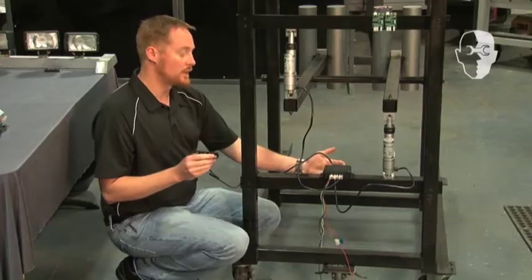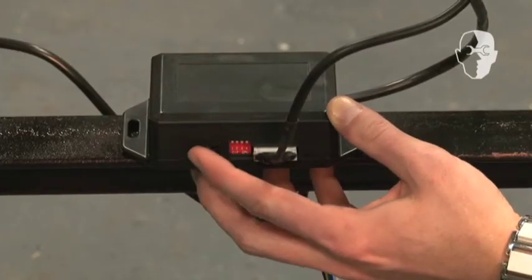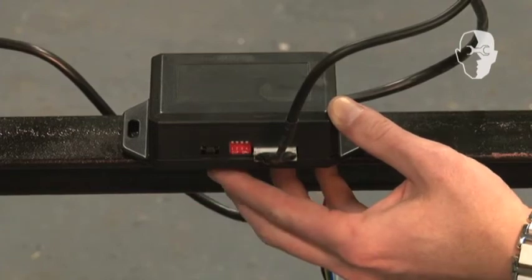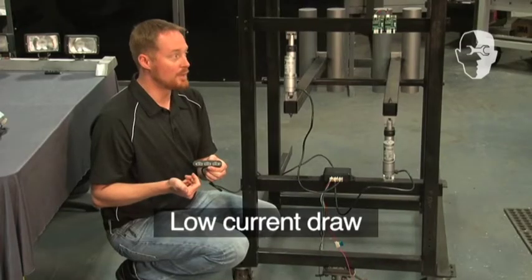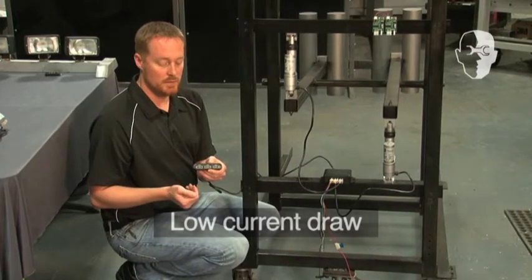Controlling the other actuator means moving the control switch to the opposite side. Controlling both actuators means moving the switch to the center, and they can be pre-programmed to operate simultaneously or in sequence.